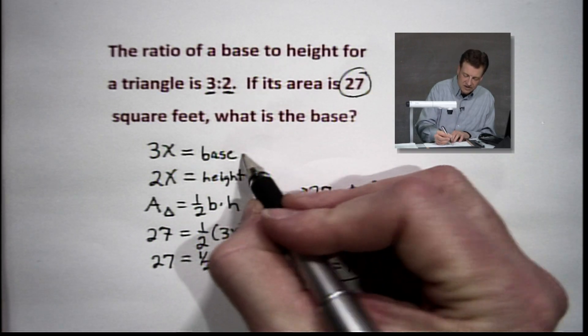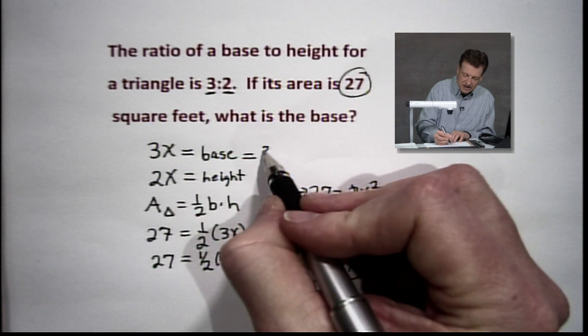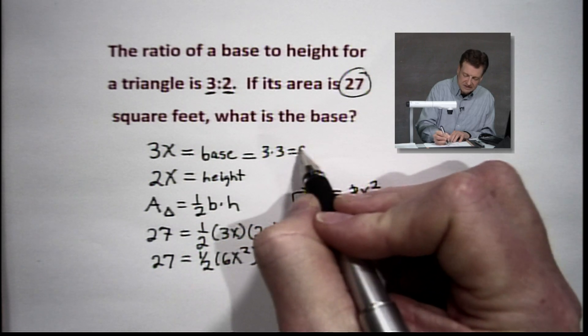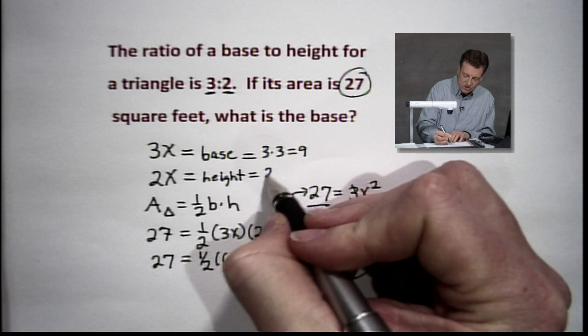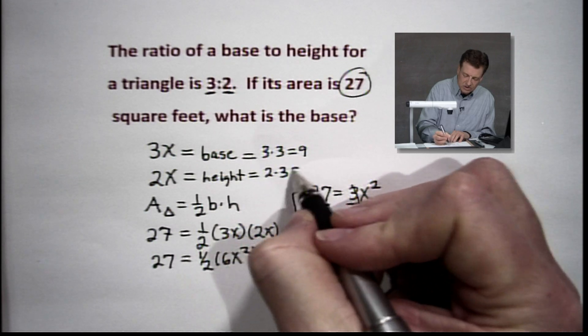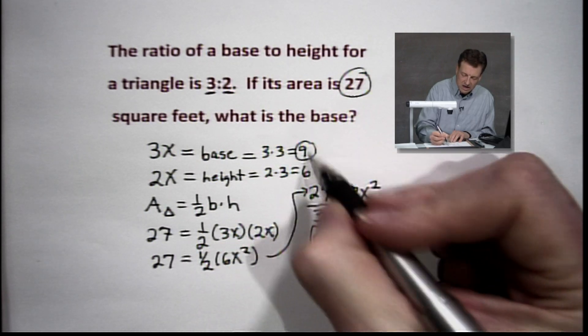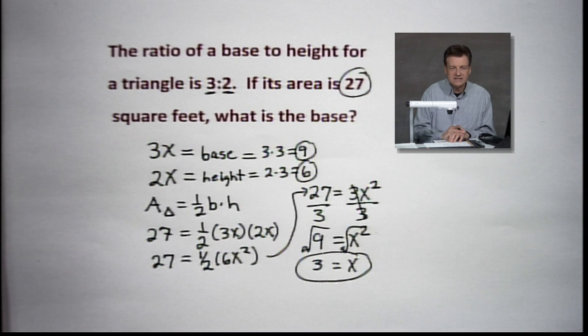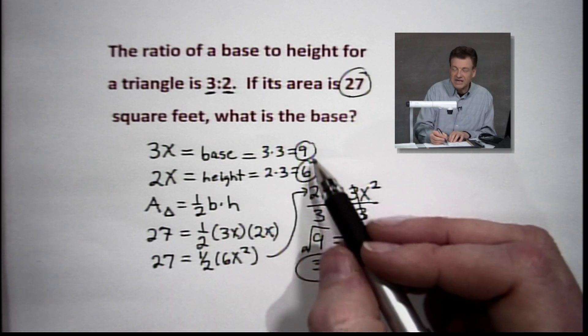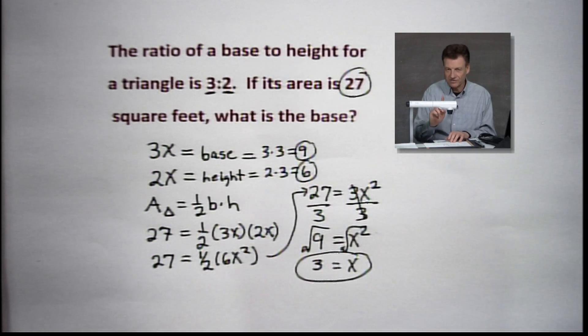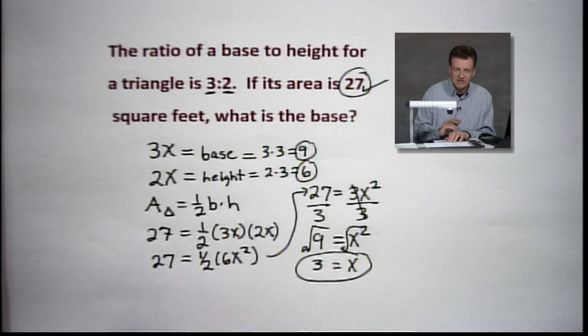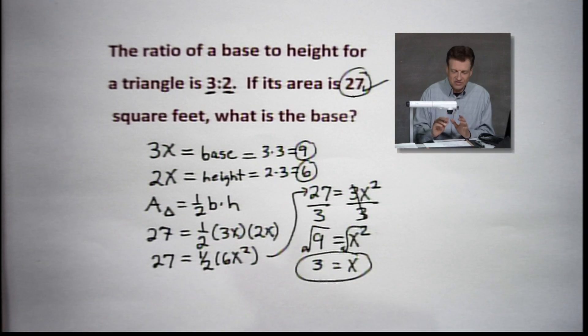Got to go back and figure this out. The base is 3 times 3, which is going to give us 9. The height is 2 times 3, which gives us 6. Now you say, well, Ernie, 9 times 6 does not give you 27, but it does give us 54, and when we take half, we get back to 27. So it checks out there very nicely.